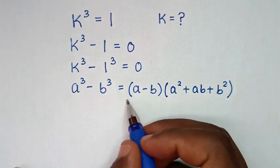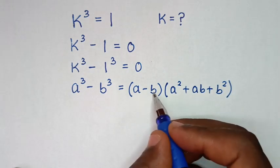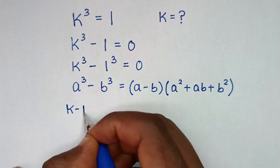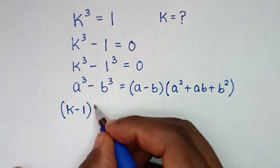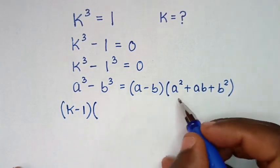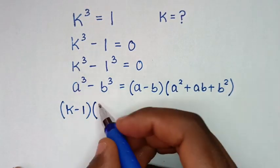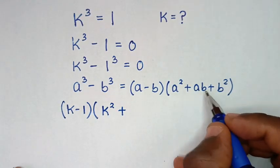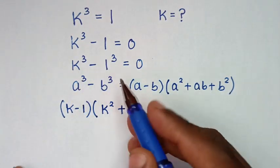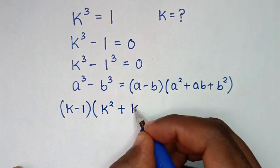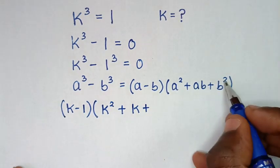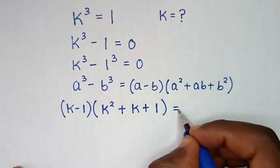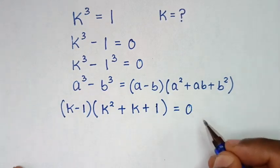We'll apply this form — a minus b will be k minus 1, so here it is k minus 1 bracket, then bracket a square will be k square, then plus ab will be k times 1, which is k, then plus b square will be 1 square, which is 1, bracket is equal to 0.